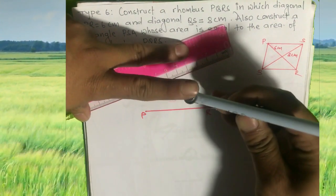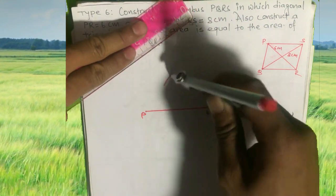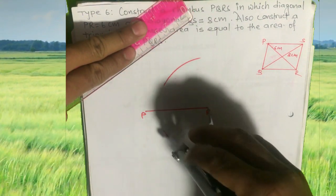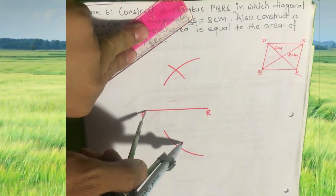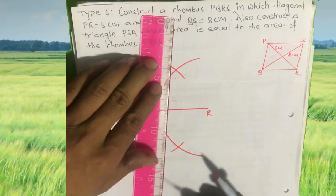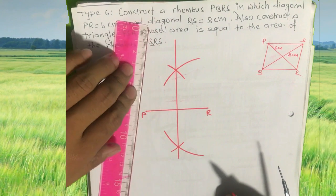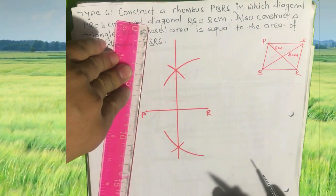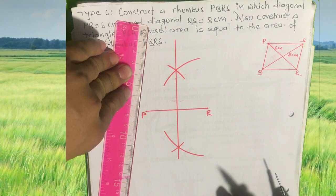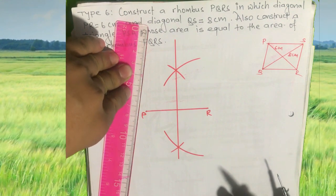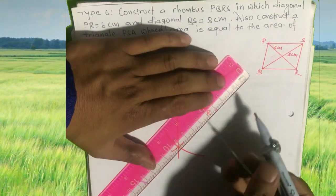Draw arcs to construct the perpendicular bisector of line PR. This line is the perpendicular bisector of PR. Since diagonal QS is 8 cm, make an arc of 4 cm from the midpoint of PR on the perpendicular bisector.